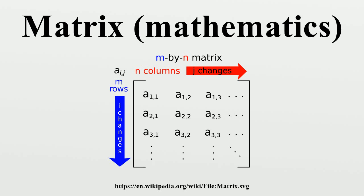The trace, Tr, of a square matrix A is the sum of its diagonal entries. While matrix multiplication is not commutative, the trace of the product of two matrices is independent of the order of the factors: Tr(AB) equals Tr(BA). This is immediate from the definition of matrix multiplication. Also, the trace of a matrix is equal to that of its transpose, i.e., Tr(A) equals Tr(A^T).